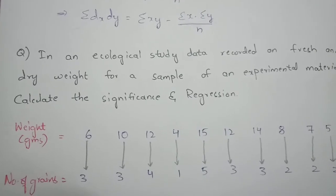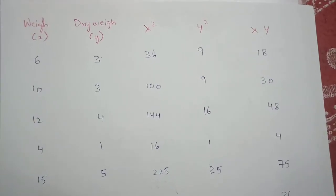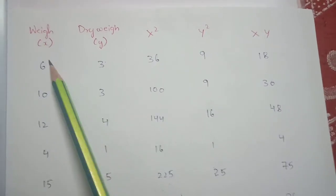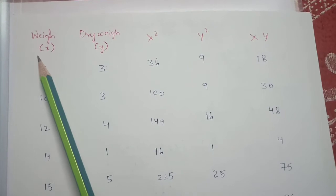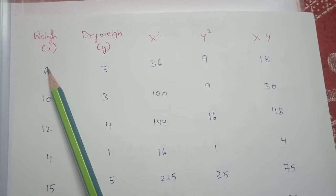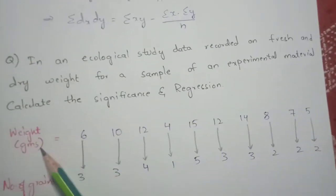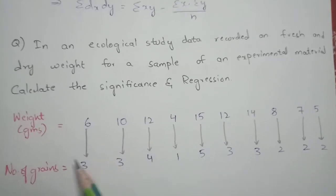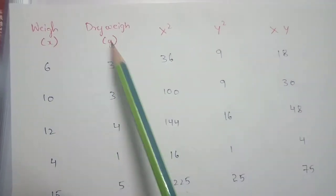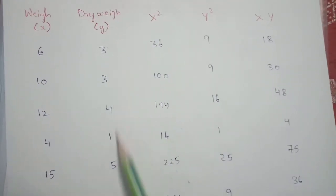Before calculating, form a table with columns: X, Y, X squared, Y squared, and XY. Here X represents weight in grams and Y represents number of grains.